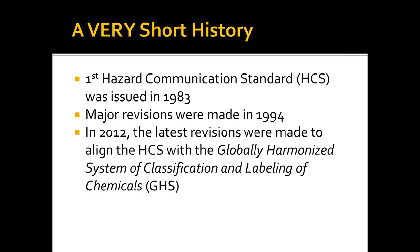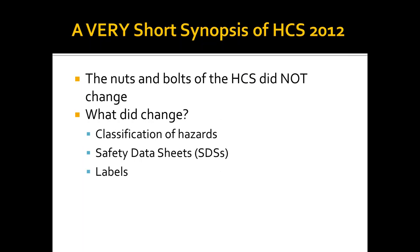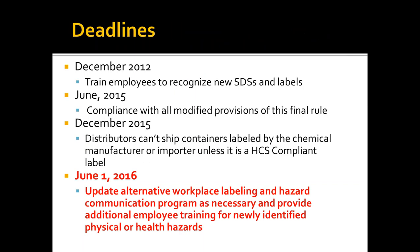The latest revision occurred in 2012 to align the hazard communication standard with GHS. I'm not going to go through all the nuts and bolts, because a lot of the requirements didn't change. What did change was the classification of hazards, moving from material safety data sheets to safety data sheets, and labeling — which is probably the biggest thing that changed. As of June 1st, your programs need to reflect any alternative labeling systems you might be using.